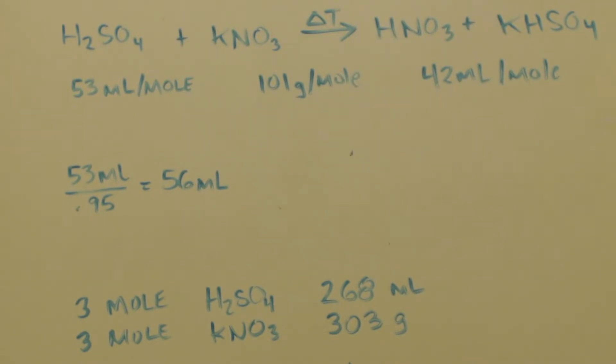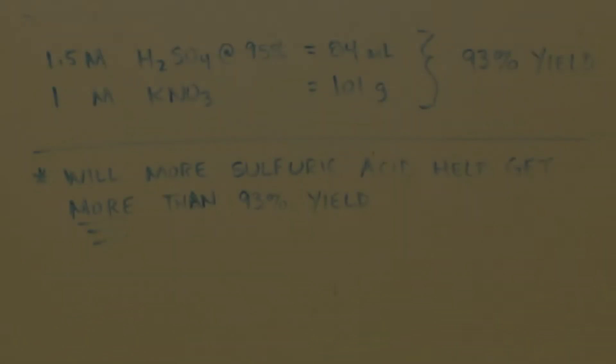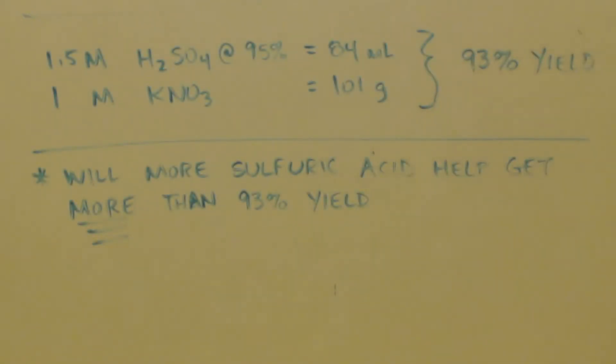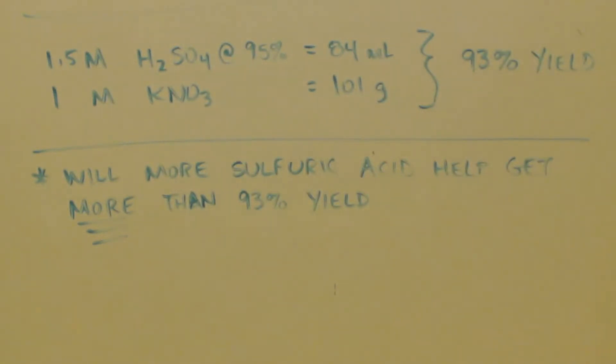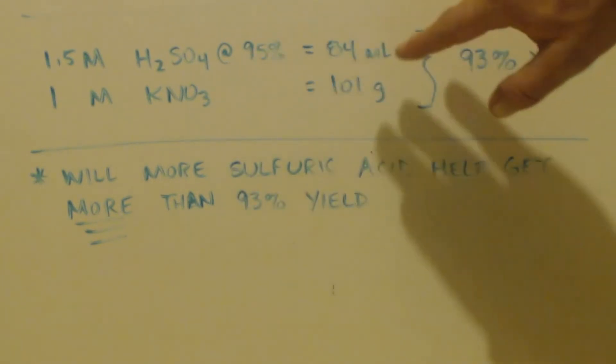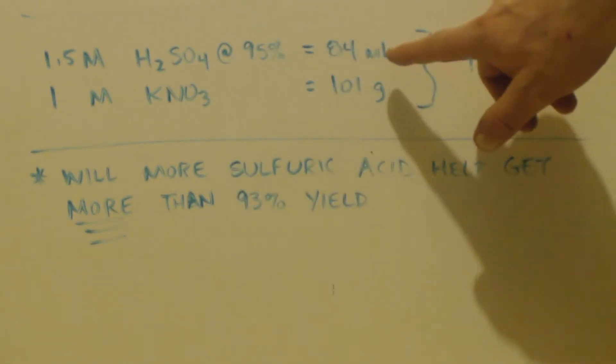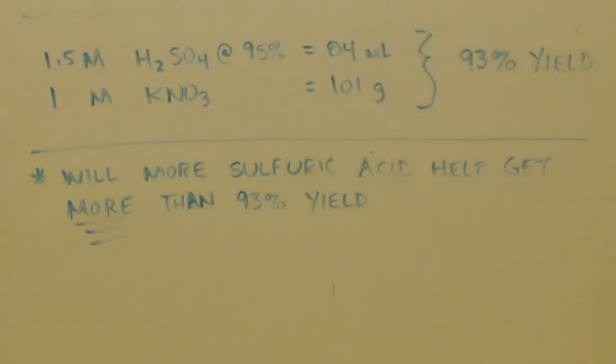Now in the first video where I only got 50%, I did a one to one ratio. That only got me 50%. Now look at this new ratio. Now the new ratio that I do and I get 93% pretty much every time. Instead of a one to one ratio, I'm using a 1.5 to one ratio. So instead of every 101 grams of potassium nitrate, instead of adding 56 milliliters of sulfuric acid, I add 84 milliliters. And that makes all the difference to double your yield almost.